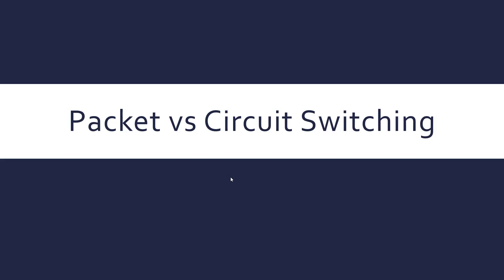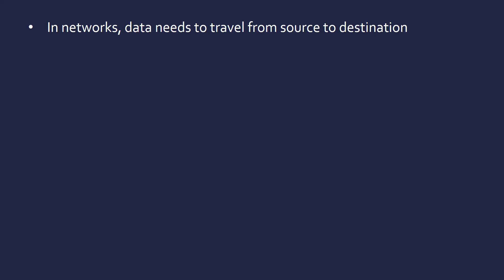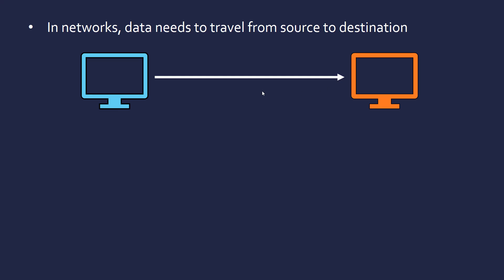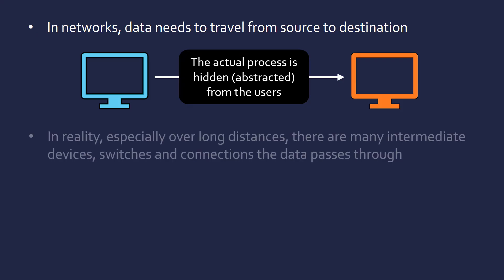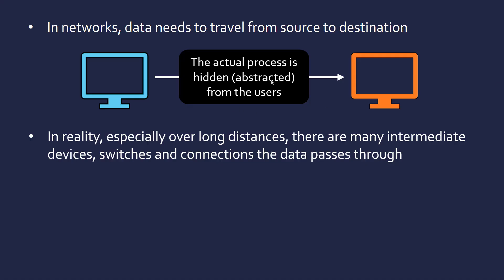Packet switching and circuit switching are two modes of data transmission. Now I want to talk about them in slightly more detail and eventually evaluate them, because they're two different ways we can send data. To move data, it's going from a source computer to a destination computer. Once you click send on a message, the actual process is hidden from us as regular users — abstracted — because we don't want to worry about what's going on every time we use the internet. But the actual process is dependent on whether it's packet switching or circuit switching, and it's much more complicated than it seems.